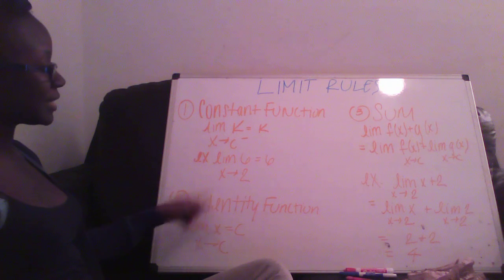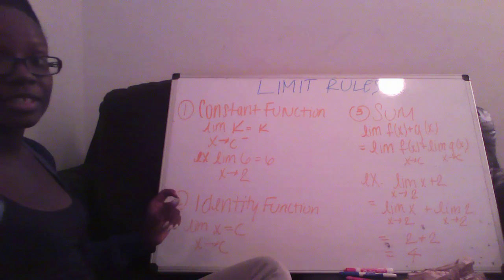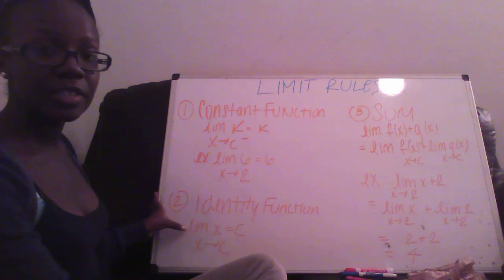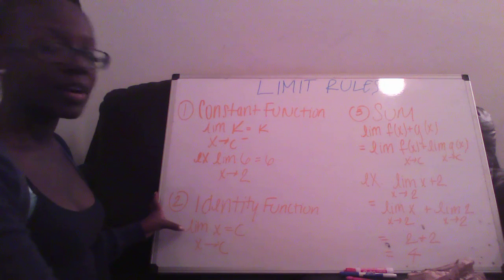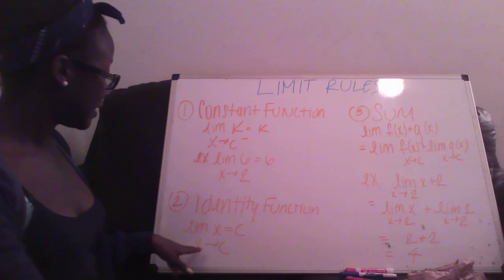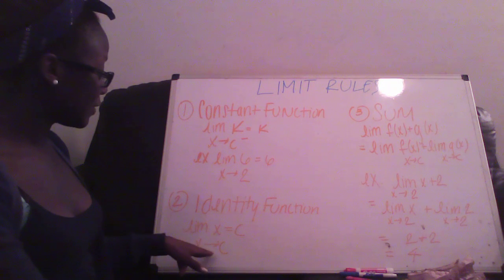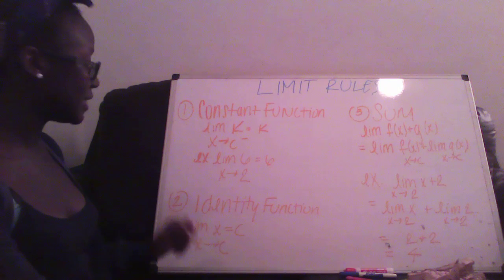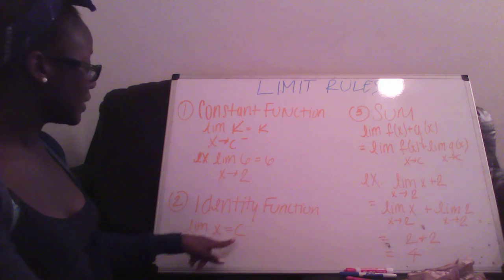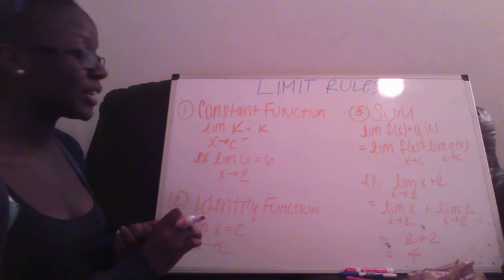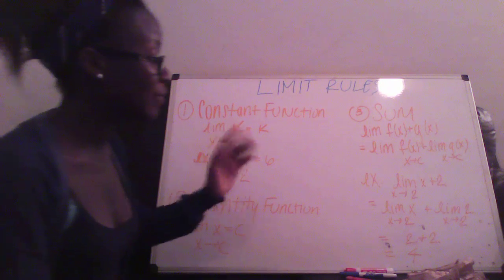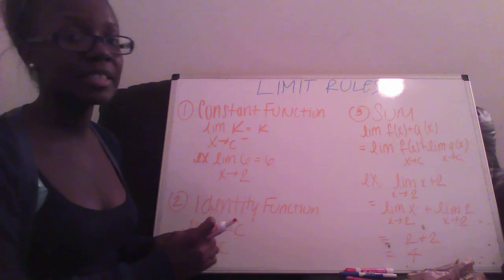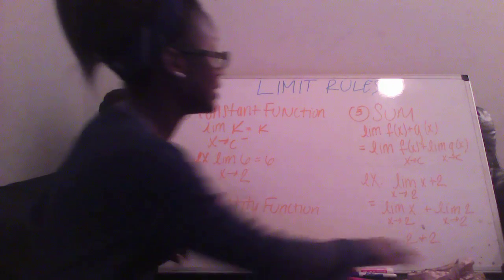The second one we're going to talk about is the identity function. For this one, you have the limit of x with x going in the direction of c, and it's going to equal c. Whatever direction it's going in, whatever it's going to, that's what it's going to equal.